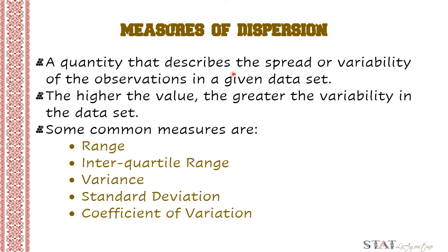Dispersion is a quantity that describes the spread or variability of the observations in a given data set. Remember that the higher the value, the greater the variability in the data set. There are some common measures: we have the range, the interquartile range, the variance, the standard deviation, and the coefficient of variation. The coefficient of variation is really important in experimental research, especially for agriculture and biology.